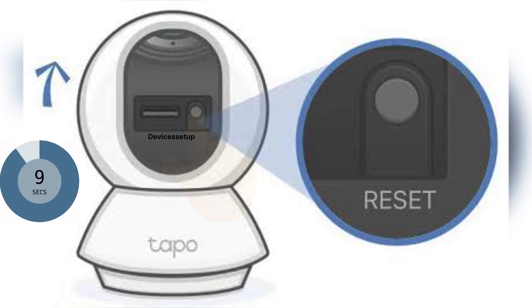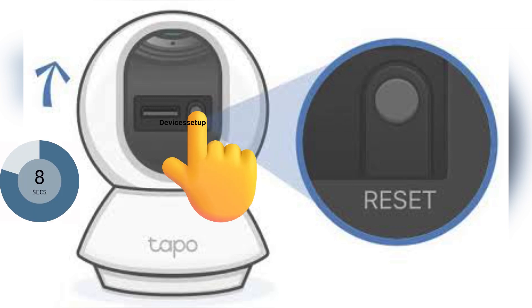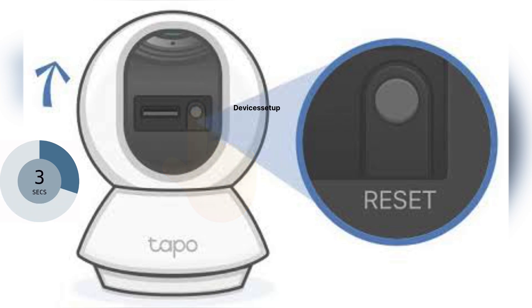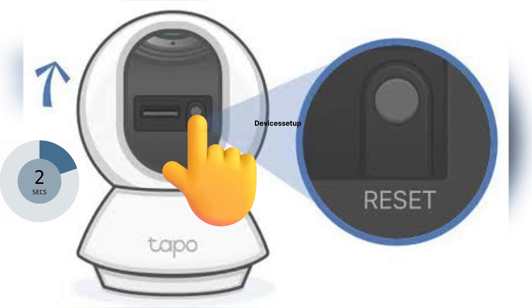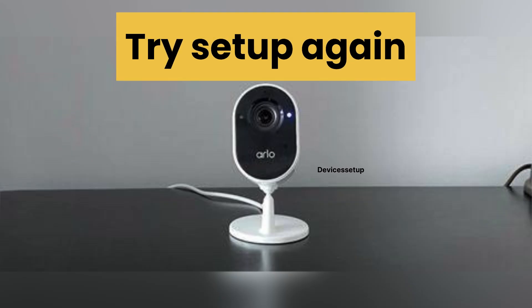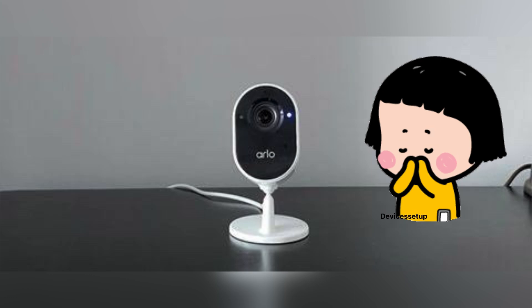Lastly, try to reset your camera. You can do that by pressing the reset button for around 10 to 15 seconds while it is powered on or plugged into a power source. After 15 seconds, release the pin and let the camera reboot. Once it is up, try the setup again.